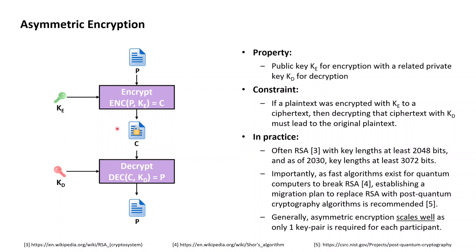The resulting ciphertext again looks like a random piece of data to anyone without any knowledge about the private decryption key corresponding to the public key used for the encryption. However, if in possession of the private decryption key associated with the public key that was used for the encryption, then this private decryption key can be used to decrypt the ciphertext back into the original plaintext.